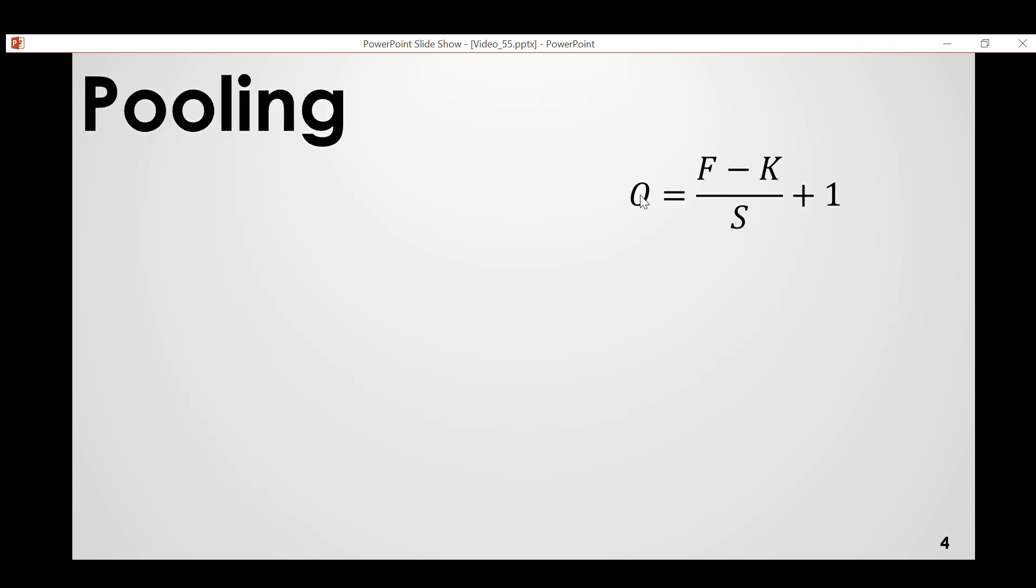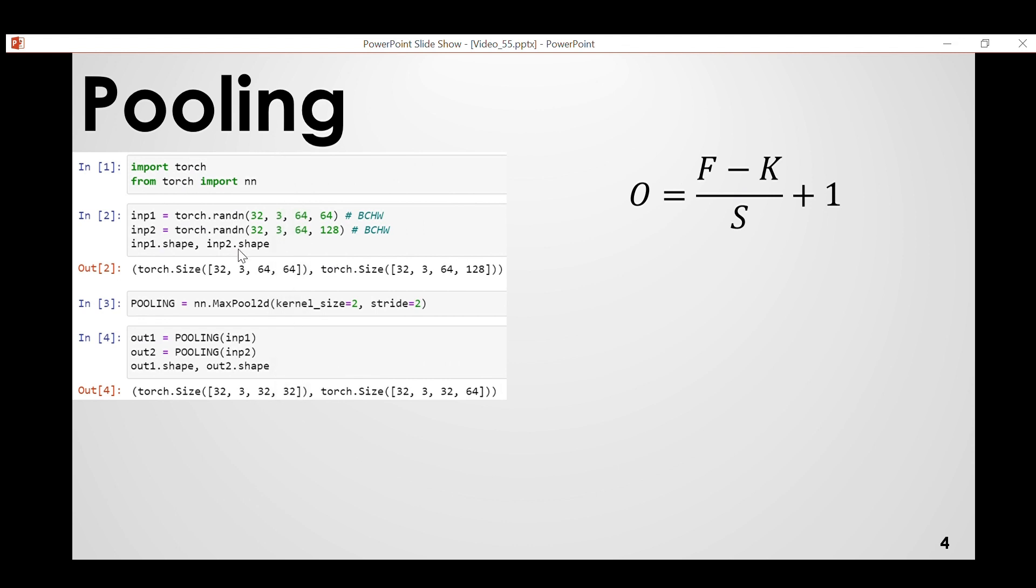So this is the formula for pooling: F minus K divided by S plus one. I ignored the padding part, I also didn't use it in my example. So if F is input, K is kernel size, and S is stride. Let's now look at the example. So again same input, I didn't change the input, but this will not be the input in neural network factual example because it is used, pulling is used after convolution.